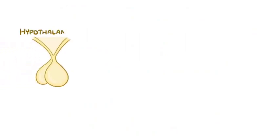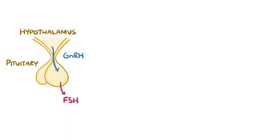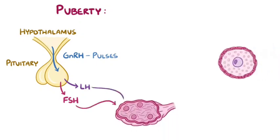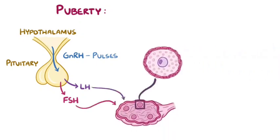Before puberty, the hypothalamus secretes small amounts of a hormone called gonadotropin-releasing hormone, or GnRH. That GnRH travels to the nearby pituitary, which secretes two hormones of its own: follicle-stimulating hormone, or FSH, and luteinizing hormone, or LH. Once puberty hits, the hypothalamus starts to secrete GnRH in pulses, sometimes more and sometimes less, and FSH and LH make the ovarian follicles develop and secrete hormones.